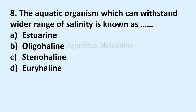Eighth question: The aquatic organism which can withstand a wider range of salinity is known as Dash. Answer options: Option A Estuarine, Option B Oligohaline, Option C Stenohaline, Option D Ureihaline. Correct answer: Option D Ureihaline.